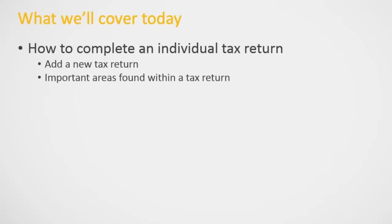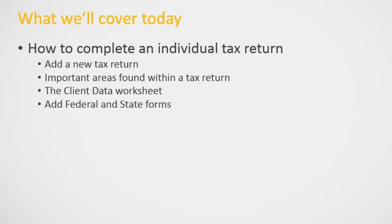Once we open that return, we'll take a look at the important areas found within a tax return — kind of give a lay of the land once you're inside of a return. After that, we're going to take a look at the client data worksheet, one of the primary forms when working with Crosslink 1040. We'll add some federal and state forms to the tax return, and we'll select the refund disbursement method — in other words, how the taxpayer wants to get their refund.